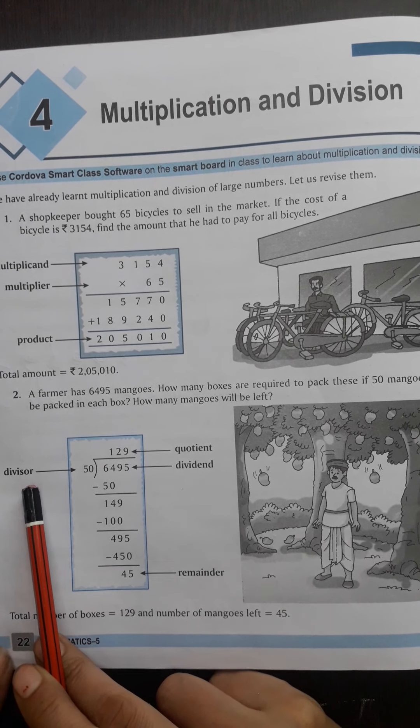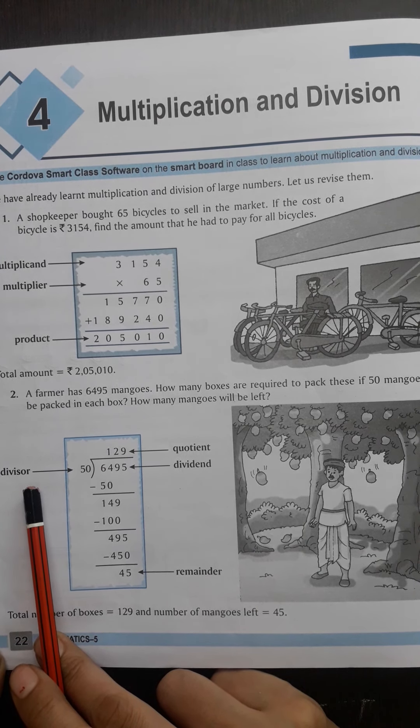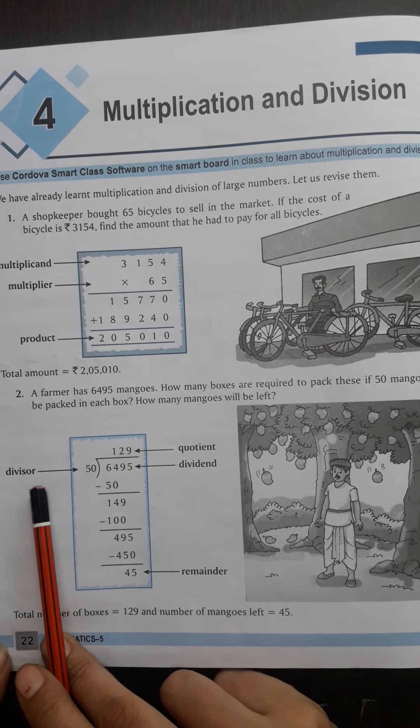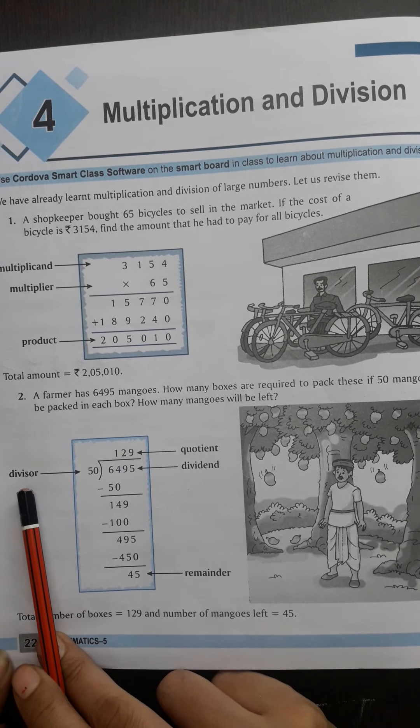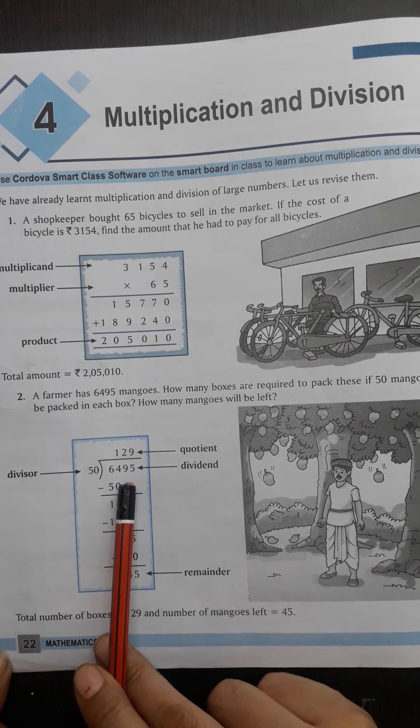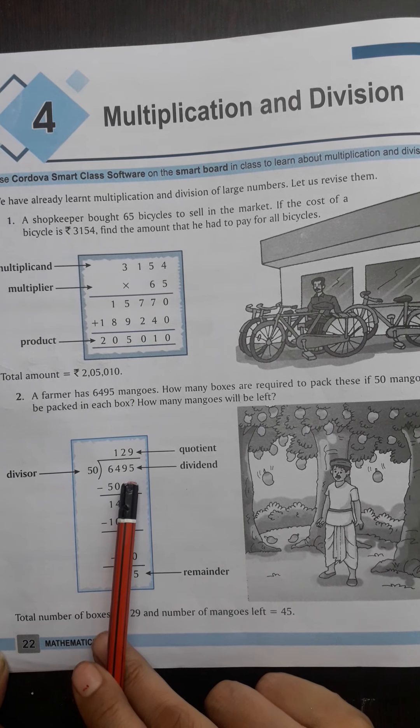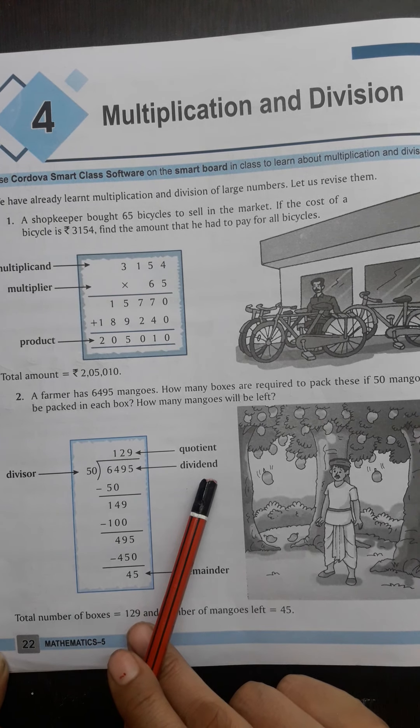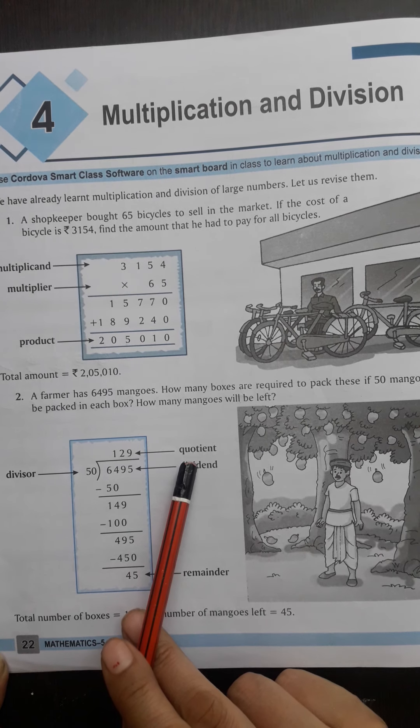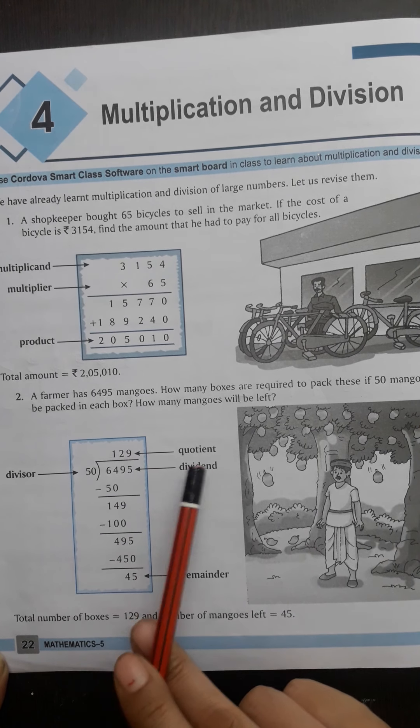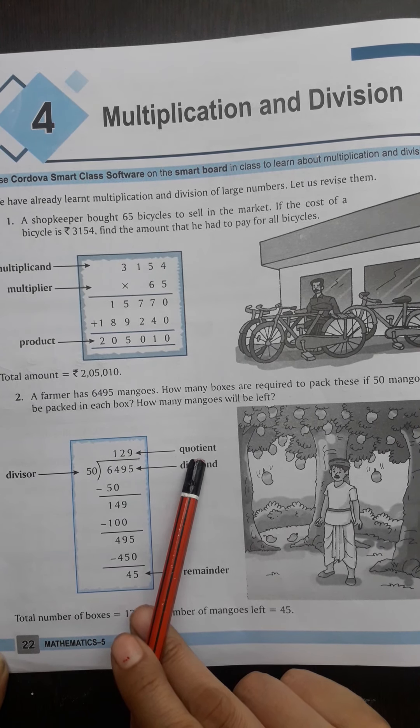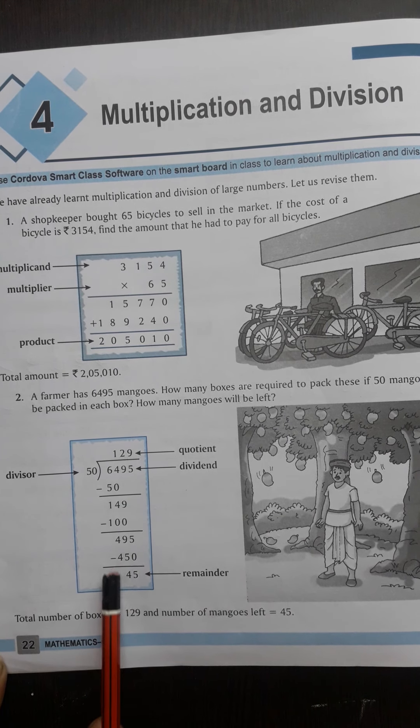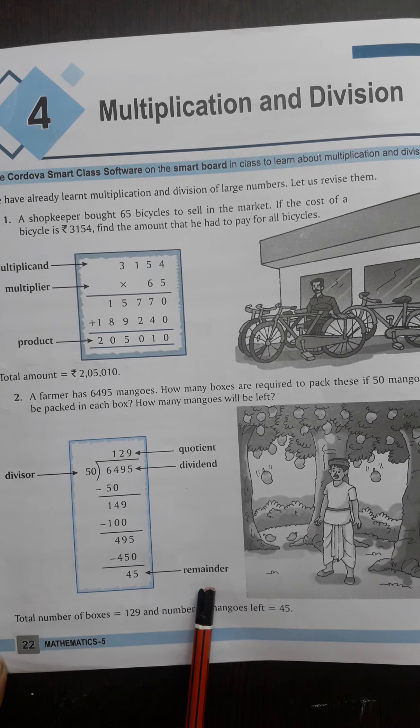In division, the small number we divide by we call divisor. The big number we call dividend. The answer we call quotient, and then the remainder.